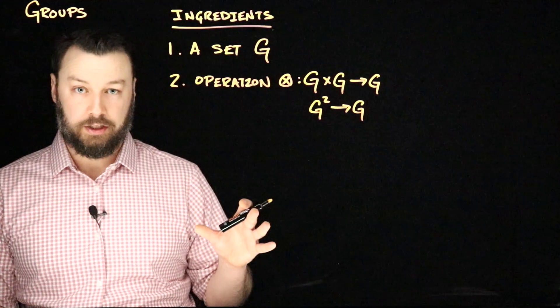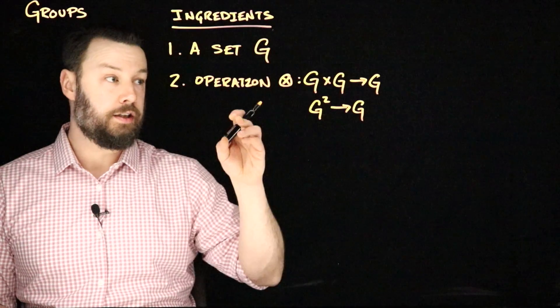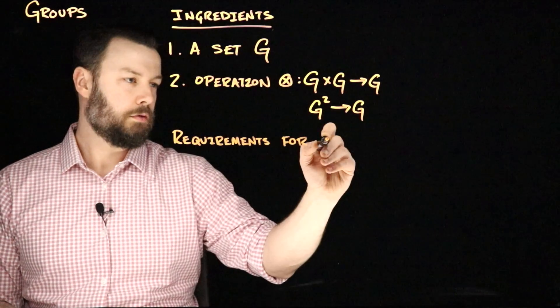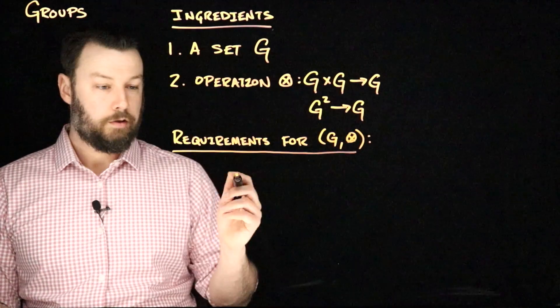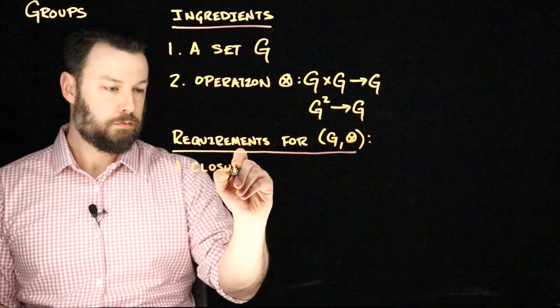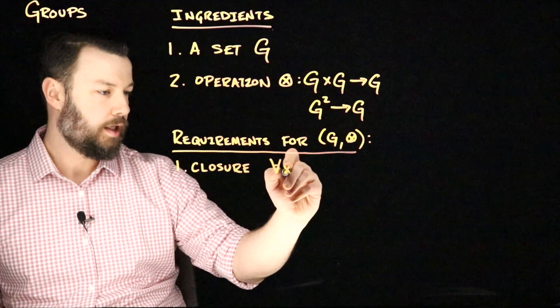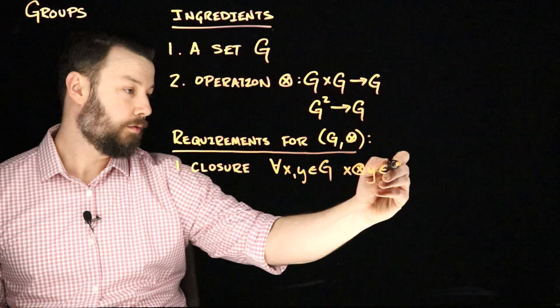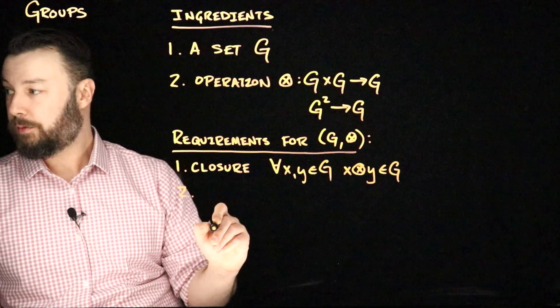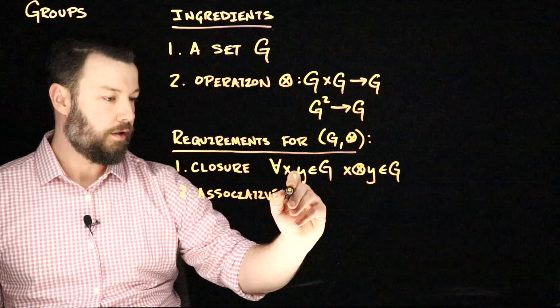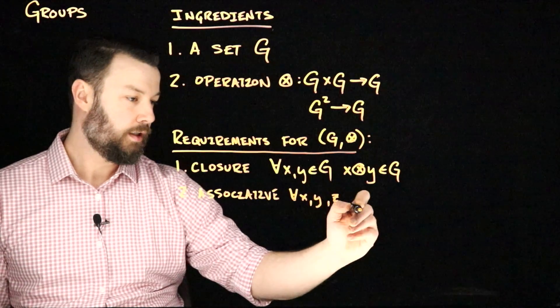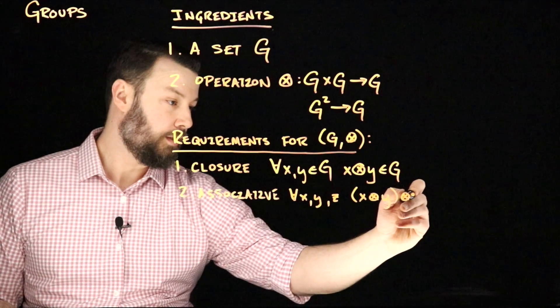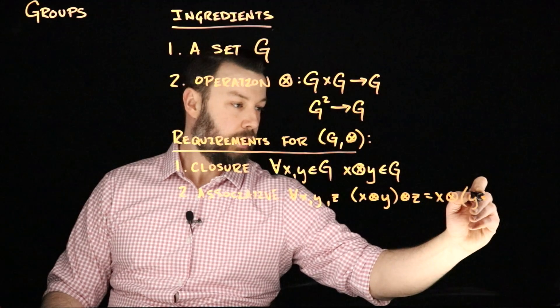The key thing here is that it takes two objects of G and produces another object that is always in G. That gets us to the requirements for the group, which is the pair of the set G and the operator. The first requirement is closure. Closure is the idea that for all pairs X and Y in the set G, X operator Y is also a member of G. We also need the operation to be associative, which means that for all X, Y, and Z, the operator applied to X operator Y operator Z needs to be equal to X operator Y operator Z with different grouping.